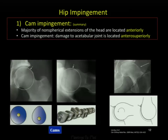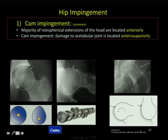In CAM impingement, the majority of non-spherical extensions are anterior, and consequently most damage is anterosuperior. The gunstock deformity represents almost an extreme version—as opposed to a small bump, you get an extreme abnormality of the head-neck junction.